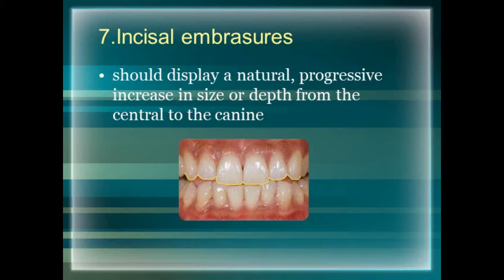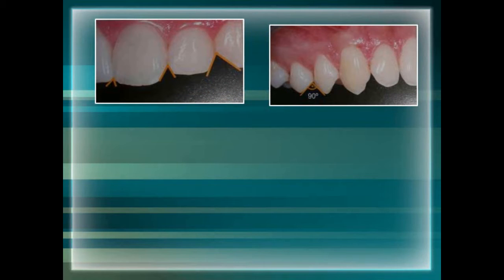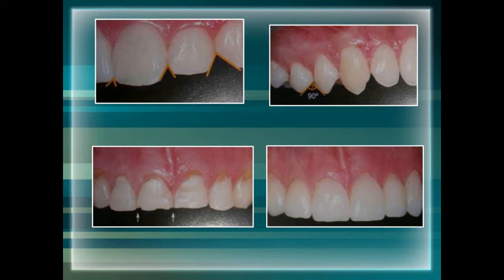The next tooth component is incisal embrasures. As we go from the midline towards the canine, the incisal embrasure should display a natural progressive increase in size and depth. The central incisor has the smallest and sharpest incisal embrasure, while in premolars the incisal embrasure angle between two teeth is 90 degrees. In a worn-down dentition the incisal embrasure is very small or disappearing, and in that case we have to lengthen the teeth and recreate the incisal embrasure for a younger appearance.